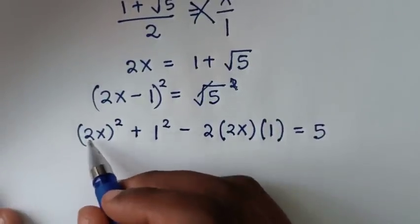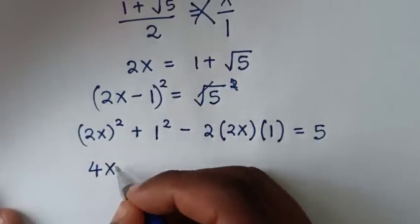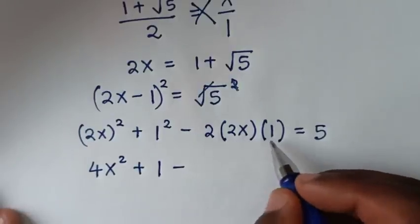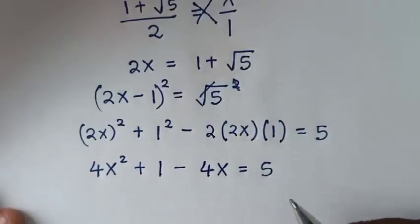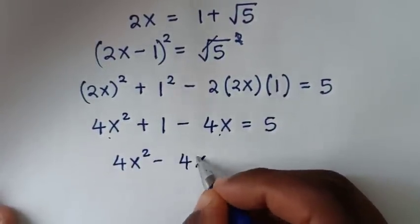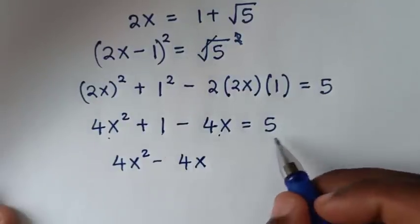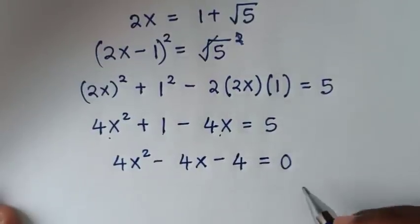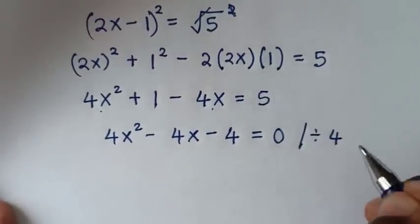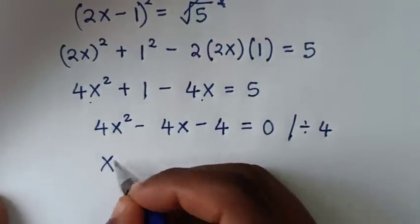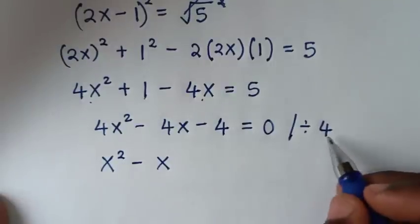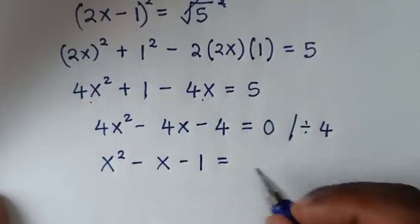In the next step, to remove this square root, we square both sides. The square of (2x − 1) expands as (2x)² + 1² − 2·(2x)·1, and the right side: the square root cancels to give 5. So 4x² + 1 − 4x = 5. Taking 5 to the other side gives 4x² − 4x − 4 = 0. Since this quadratic is divisible by 4, we divide through by 4: x² − x − 1 = 0.